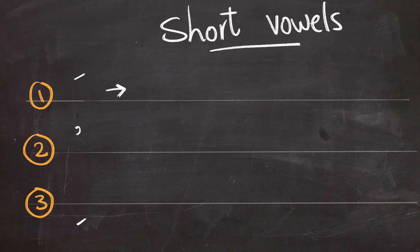The first one we're going to learn today is this sign that you write on top of the letter, and it gives the sound of A. And the name of this symbol is called Fatha.